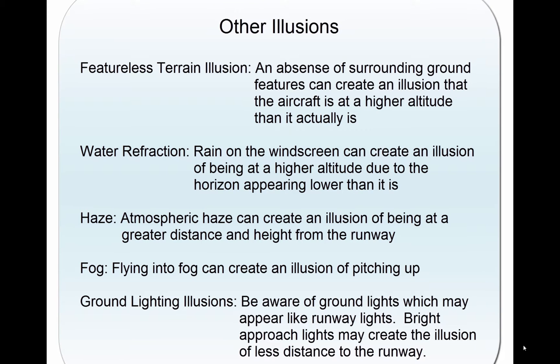Featureless terrain illusion. An absence of surrounding ground features, as in an over-water approach, over-darkened areas, or terrain made featureless by snow, can create an illusion the aircraft is at a higher altitude than it actually is. This illusion, sometimes referred to as the black hole approach, causes pilots to fly a lower approach than is desired.